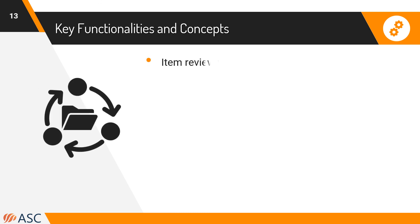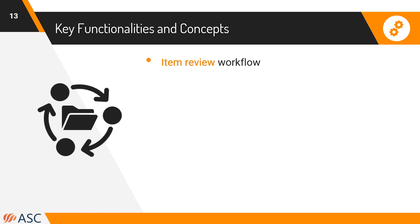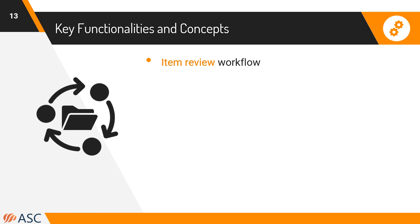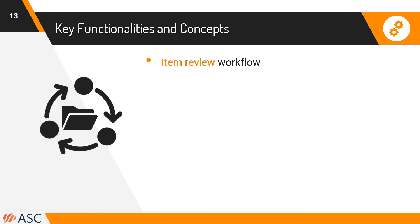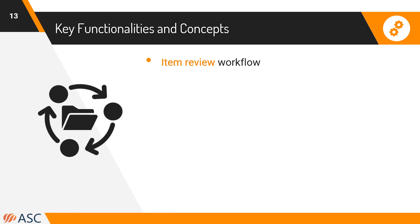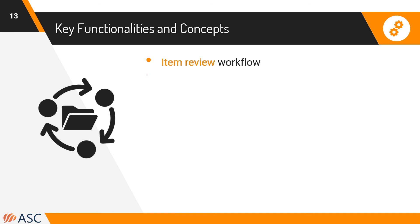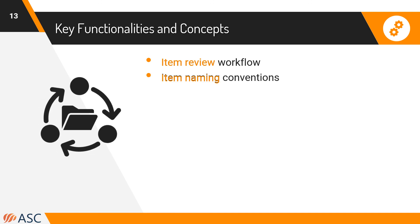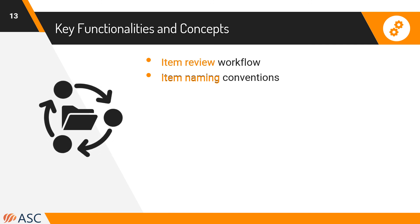A true item making platform is going to have an item review workflow. Most commonly this is customizable. For example, you might specify that after items are written by someone, they're going to be reviewed by one subject matter expert, then reviewed by a psychometrician, then reviewed by an English editor before they can be considered ready for use in an assessment. That's an item review workflow. Your item making system might also have item naming conventions so that items can only be named with conventions that have been assigned by the organization.